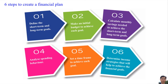Here are six steps to create a financial plan. The first step is to define the short-term and long-term goals. The second step is to make an initial budget to achieve each goal. The third step is to calculate monthly savings needed to achieve the short-term and long-term goals. The fourth step is to analyze spending behavior. The fifth step is to set the time frame to achieve each goal. The last step is to determine income strategies that will help achieve the financial goals.